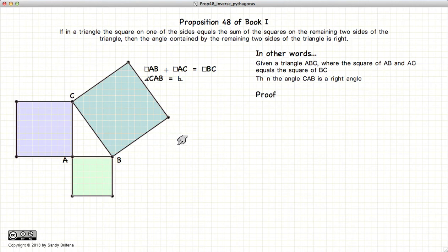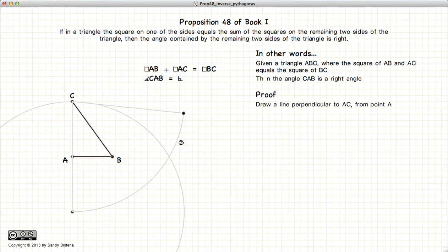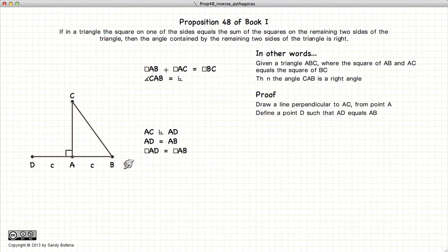Alright, so let's prove this. Let's take our original triangle ABC and draw a line perpendicular to CA so that this is a right angle. Define a point D such that AB is equal to AD and connect the points D and C.